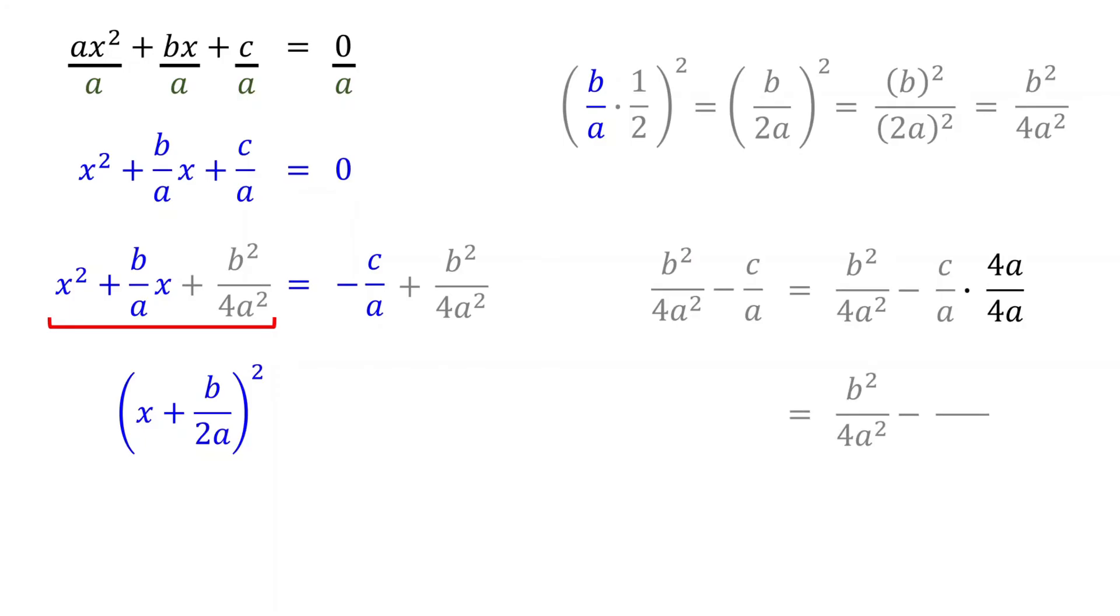This gives us 4ac over 4a squared. Now that we have a common denominator, we can combine the numerators, which will be b squared minus 4ac.